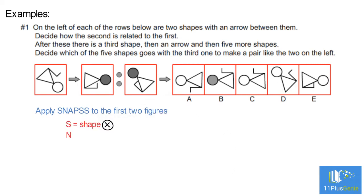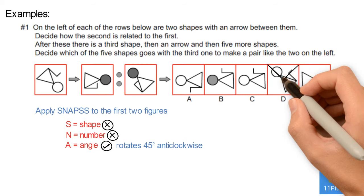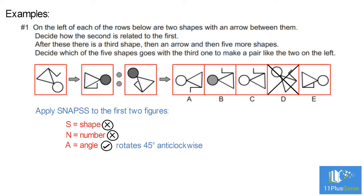S — Shape does not change. N — Number of shapes does not change. A — Angle: the shape rotates through 45 degrees anti-clockwise. In D, the shape stays the same, so we can eliminate D. In E, the shape has rotated 135 degrees clockwise, so we can eliminate E.